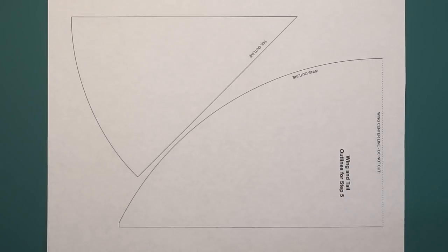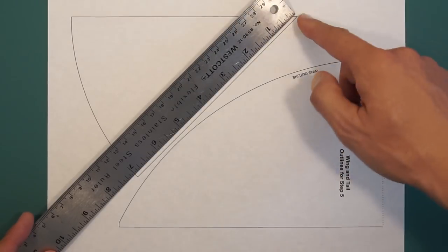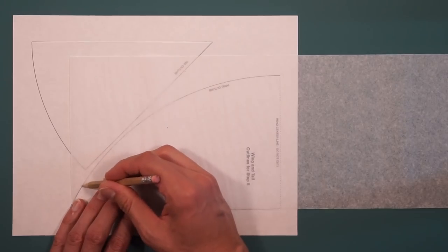Next we're going to cut out the tissue for the wings and tail. First make sure you've printed this actual size, that should be seven inches there. Next we'll trace the wing outline onto the tissue paper.